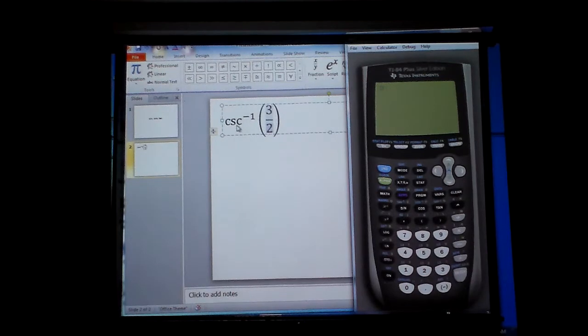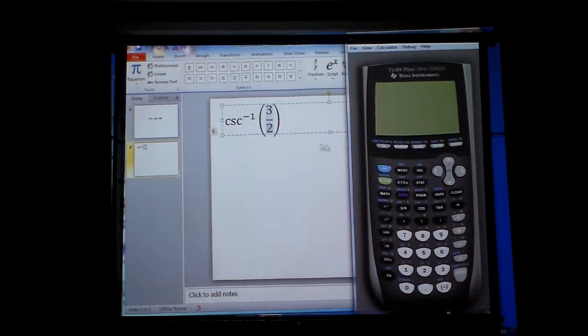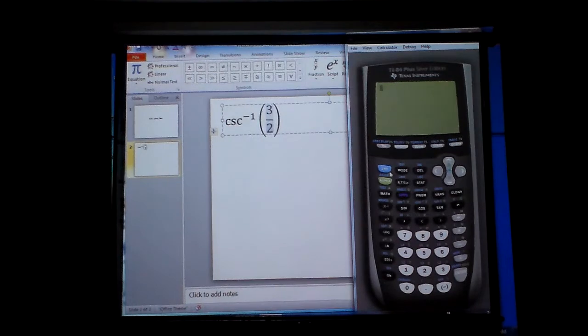First thing I'm going to do is this: What is the reciprocal of cosecant? It is the sine button. So what I'm going to do is this.